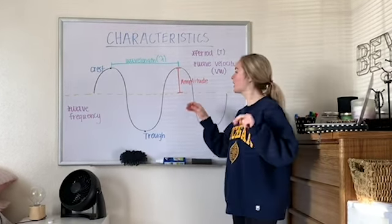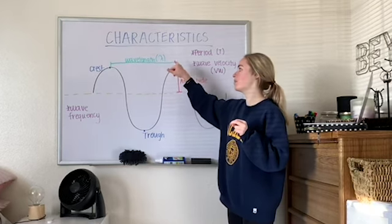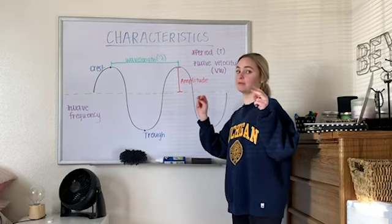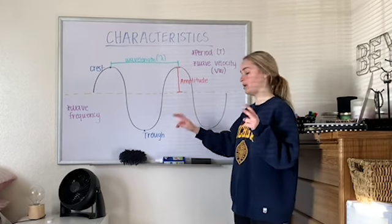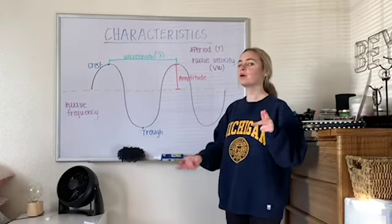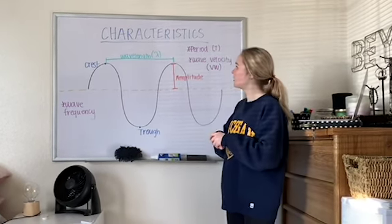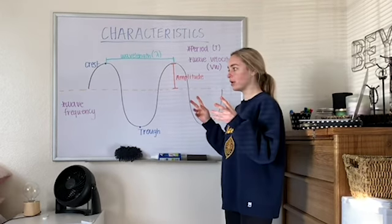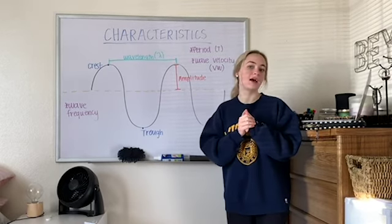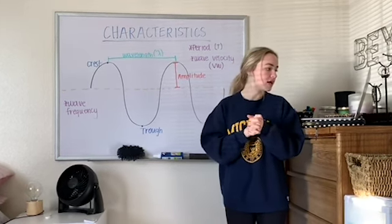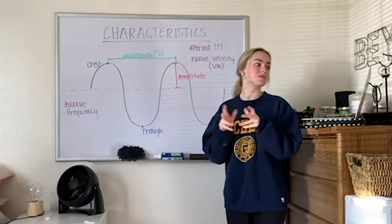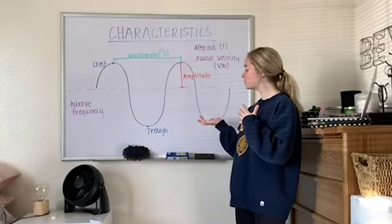This orange line is the equilibrium line, and from there to the top of the wave is the amplitude. You also have your maximums and minimums: the minimum is the trough and the maximum is the crest — those two words are interchangeable. Then you have wave frequency and wave velocity, which describe the speed at which the disturbance moves.